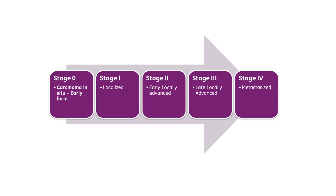There are many different types of cancer but they all follow a similar pattern of development and progression. This pattern is commonly divided into a pre-cancer stage, stage 0, and then stage 1, stage 2, stage 3, and stage 4. Let's take a closer look at each stage and see what it means.